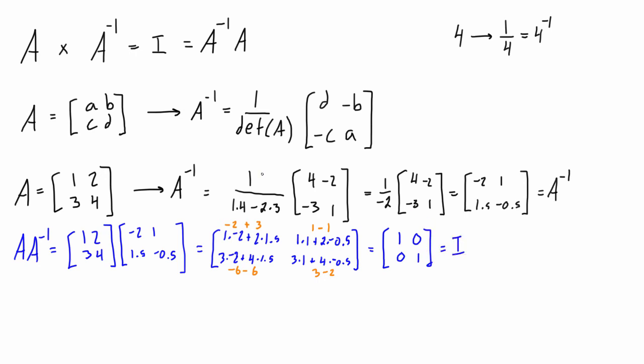All right, so if that works, the other thing that we want to try is multiplying the inverse of A to A itself and just switching the order of that, and we are hoping that this is going to end up with identity matrix as well, and that will show us that we've done this correctly.